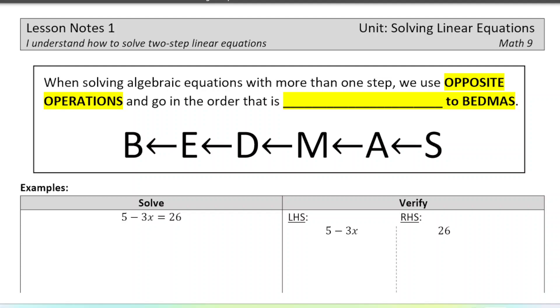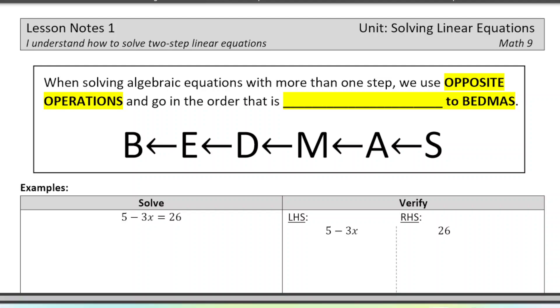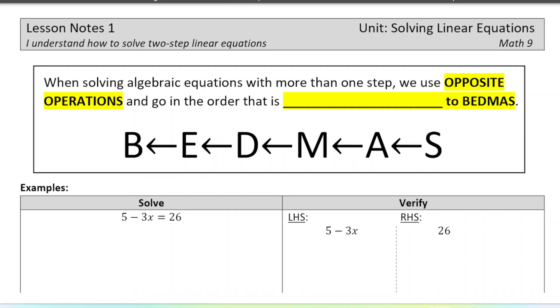What I want you to think about today as we go through the lesson is the order in which we're doing these operations. When we're solving an equation, that means we're solving for the variable, we're finding out what the variable is equal to. We go in the opposite order to BEDMAS and we use opposite operations. So we start with any adding and subtracting and then we move to multiplying and dividing. This is the order that is opposite to what you would normally do when you're just evaluating an expression with just numbers.